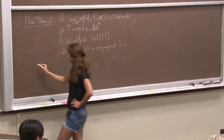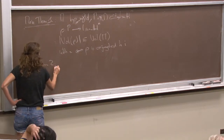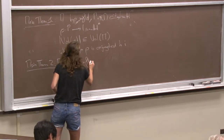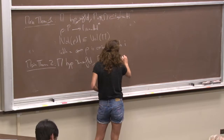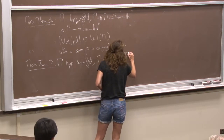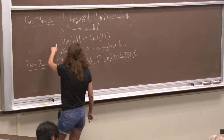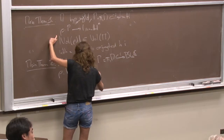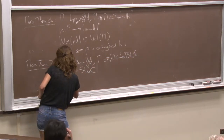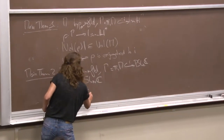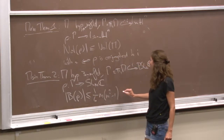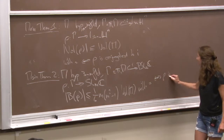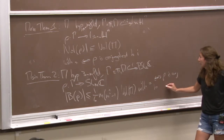The second theorem, which is similar, is now for a hyperbolic 3-manifold. We want to keep track of its lattice embedding into PSL(2,C). Then for any representation into SL(m,C), this characteristic number is smaller or equal to 1 over 6m times (m squared minus 1) times the volume of M, with equality if and only if rho is conjugated to the composition of i with the irreducible representation.